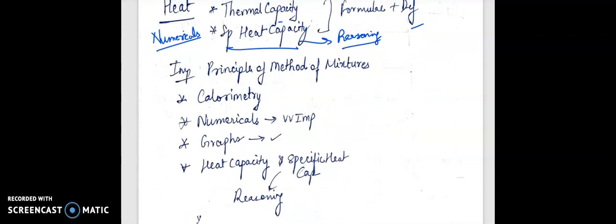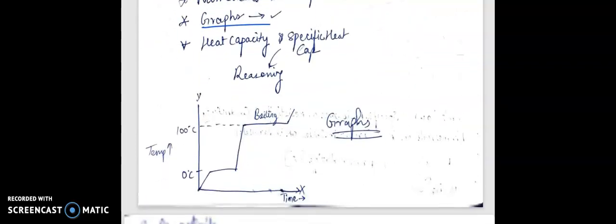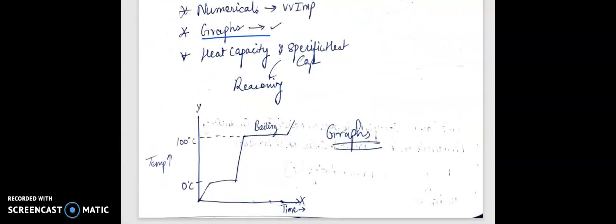Principle of method of mixtures, calorimetry numericals, the graphs. In this graph you can see temperature versus time where boiling takes place at 100 degrees Celsius and how the graph curve changes. So these graphs are important.